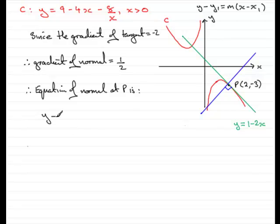And what is it going to be? Well, it's going to be y minus y1. So that would be minus minus 3 equals the gradient, which we know to be a half, multiplied by x minus x1. So x minus x1, that's going to be 2.